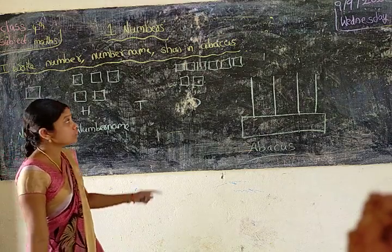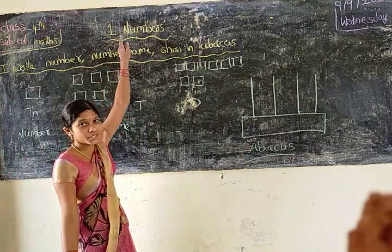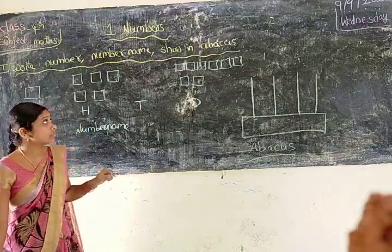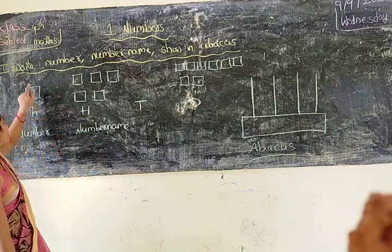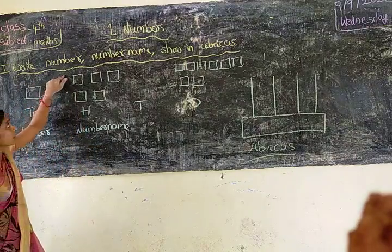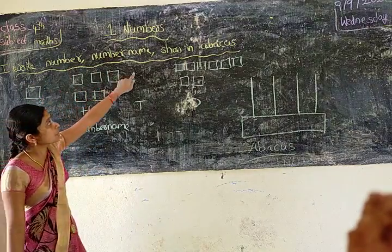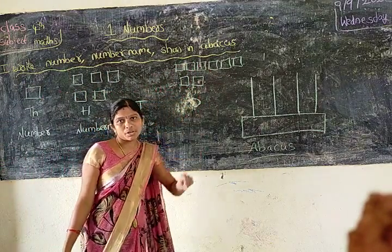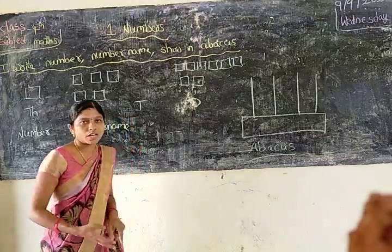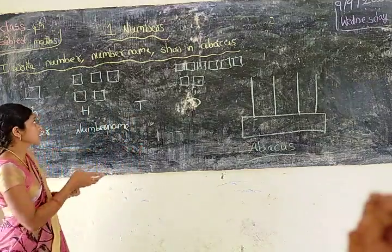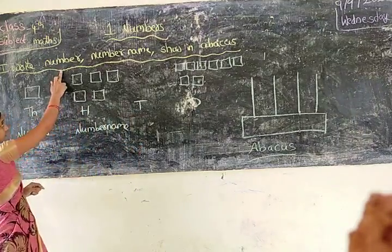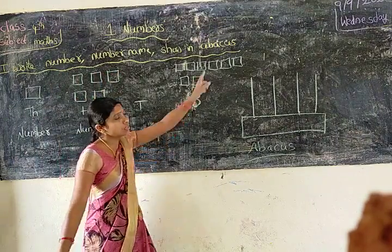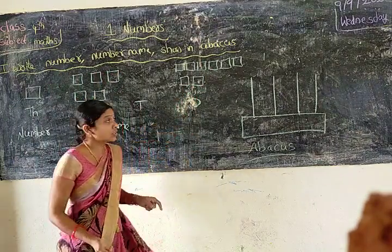So fourth class, first chapter, numbers. In the first one, we write the number, number name, and show about us. We have three ways: number, number name, and abacus.